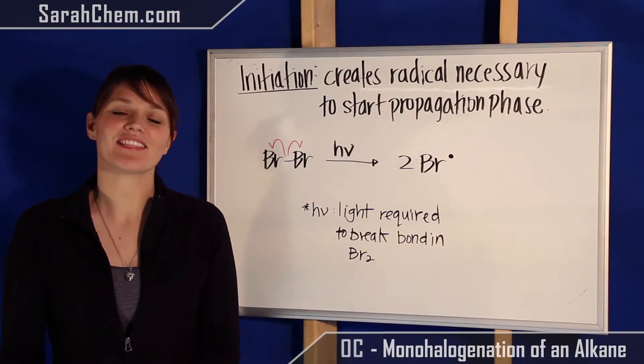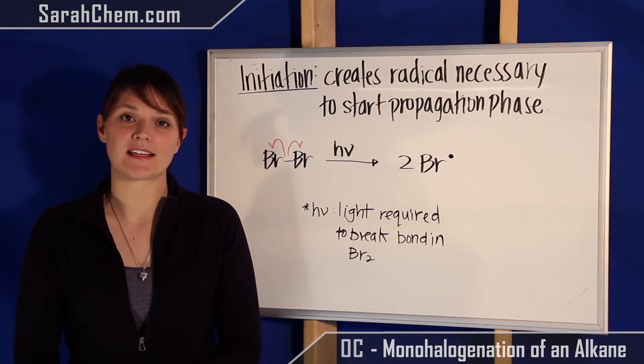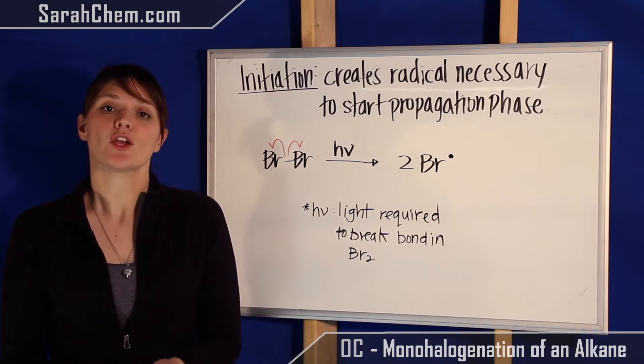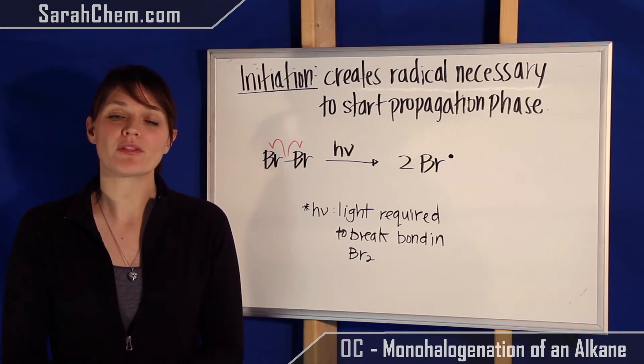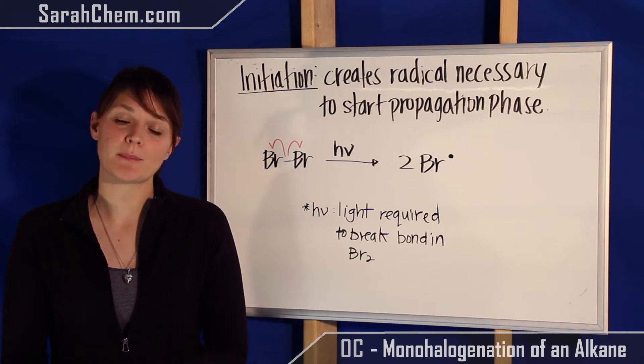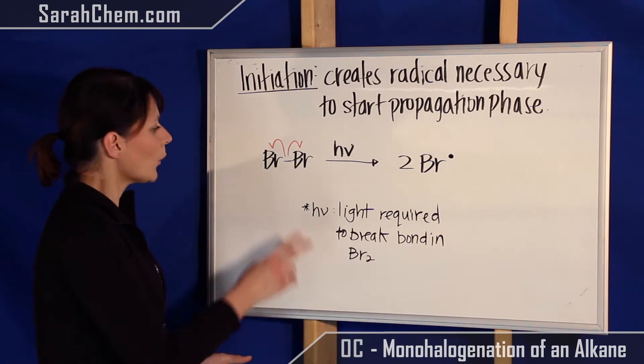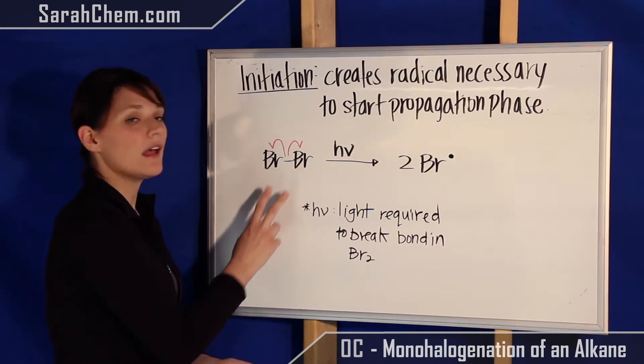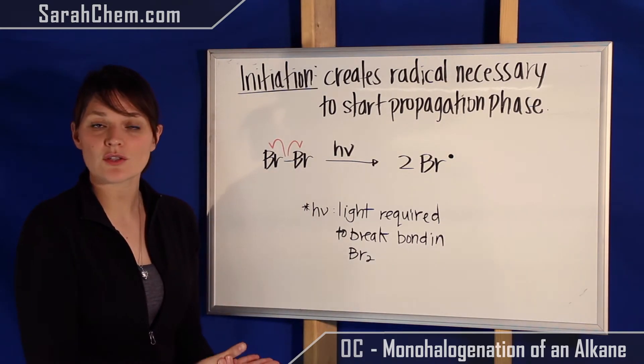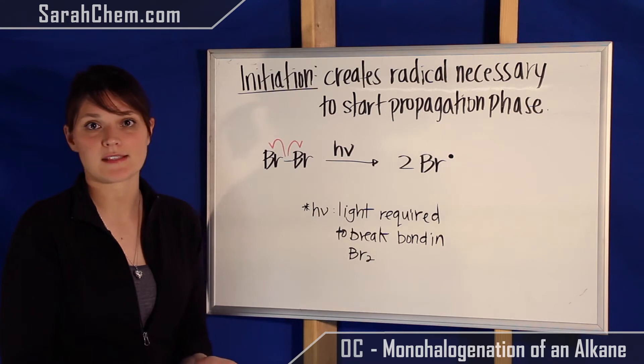Okay, so let's take a look at the initiation phase of this radical mechanism. Remember that in the initiation phase, your goal is to create the radical that will be used in the very first step of the propagation phase. So if we take a look at this over here, we have our Br2 molecule. I could have also used Cl2. The arrows would look identical in both cases.